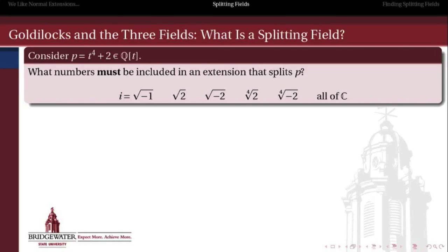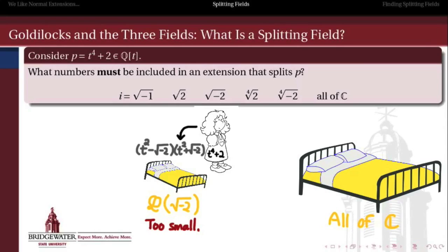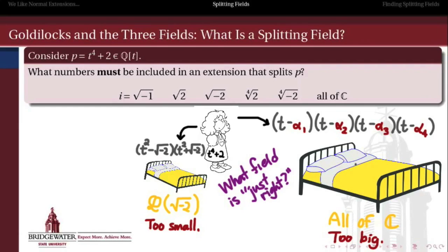Let's think about t⁴ + 2 as a polynomial over the rationals. The question is: which irrational numbers do we have to include in order to split this polynomial completely? Goldilocks tries out one of these extension fields — say ℚ adjoined √(-2). It turns out that over that field, this polynomial splits into quadratic factors but no further, so this field is too small. It doesn't contain enough irrational numbers to split this polynomial completely. On the other hand, the fundamental theorem of algebra guarantees the field of complex numbers, over which any polynomial will split into linear factors — but using the complex numbers is way too much. Is there a field in between that's just right?